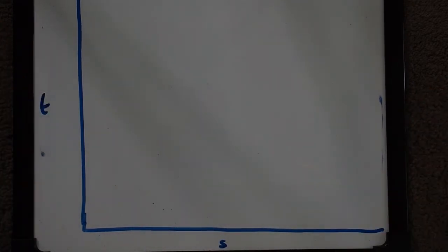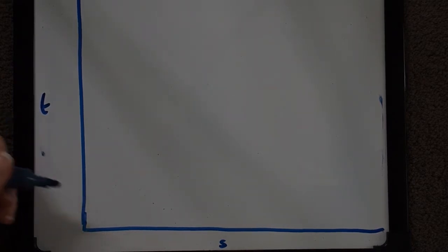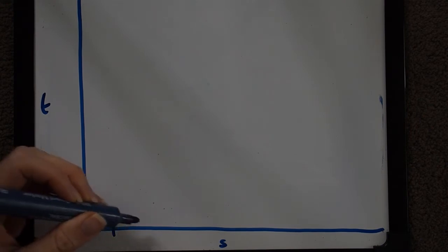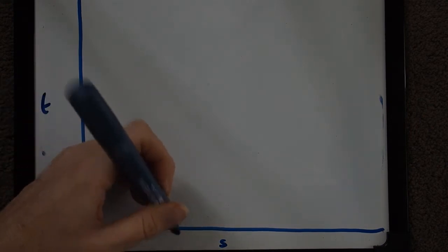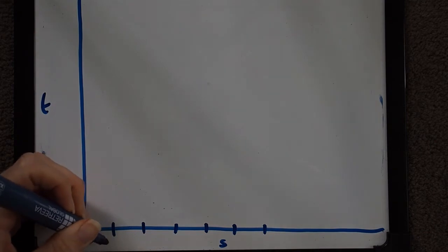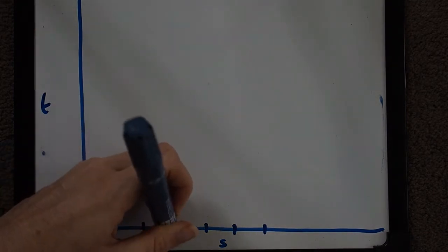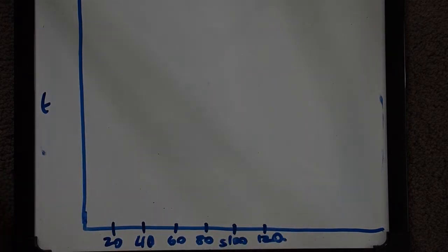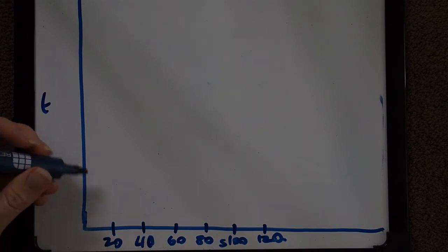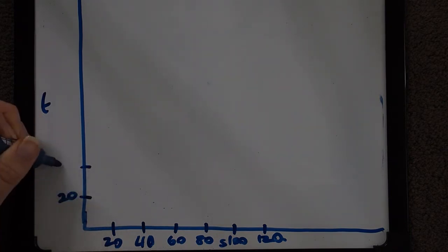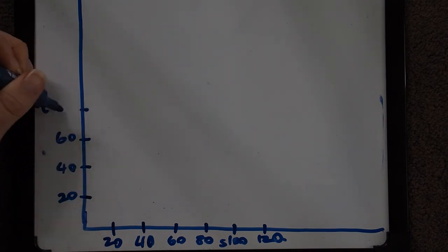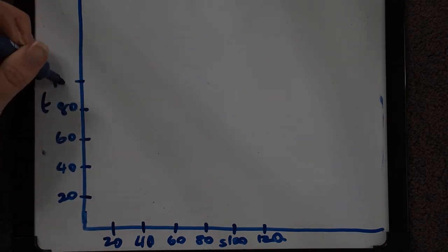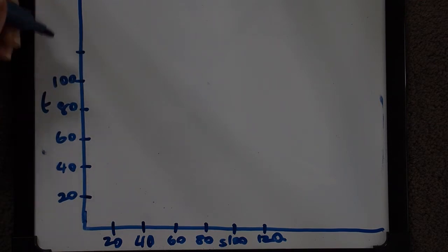Just to get a better idea of the graph I'm going to start at 20, 40, 60, 80, 100, 120. And my t values, I'm going to go up in increments of 20 just to keep it even: 20, 40, 60, 80. Of course when you're doing this it will be on graph paper so your increments will be evenly spaced.